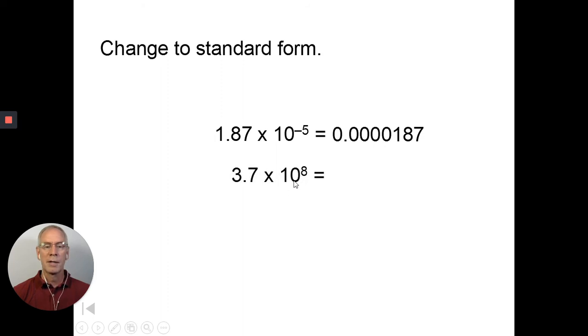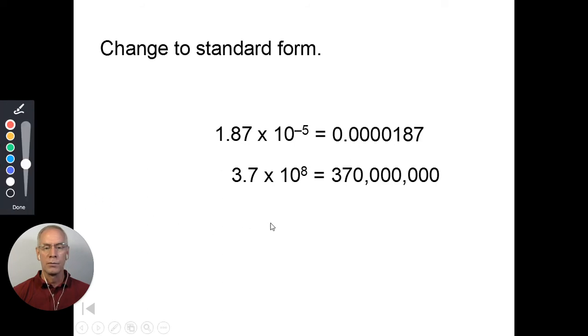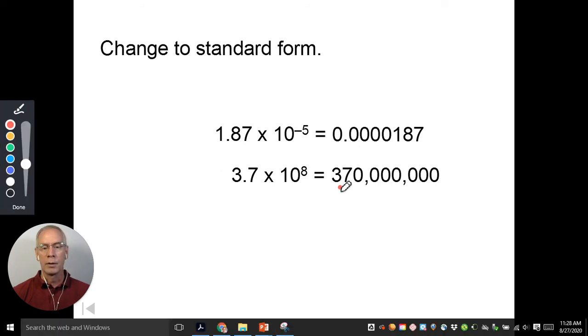Let's try this one, 3.7 times 10 to the eighth. Now, are the zeros going to go before the three or after the seven? The fact that it's a positive number, they're going to go after to make it a bigger number. So we started with the decimal here and we have to move it eight places over. So I'll go ahead and use a pen to do that for you. It started here.